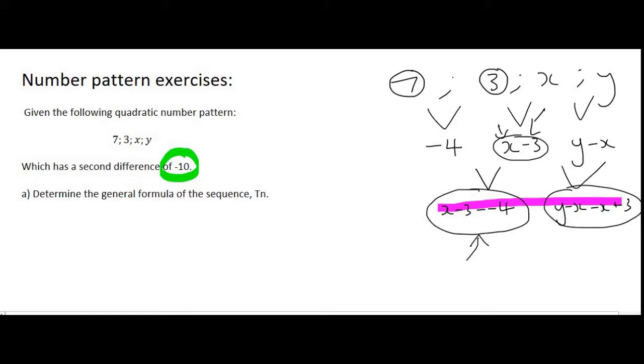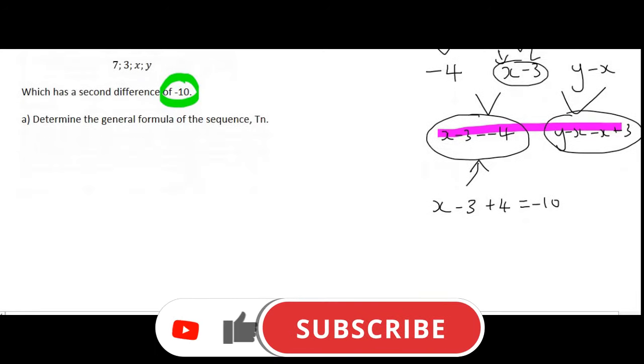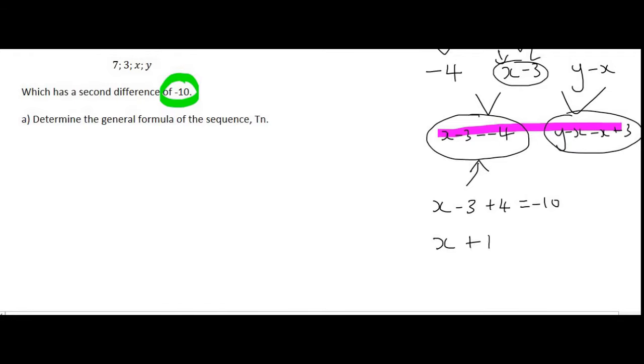We can use this one, which says x minus 3, a minus and a minus is a plus. Well, we know that that should equal minus 10. And so, minus 3 plus 4, well that gives us positive 1, equals to negative 10. And if you had to go solve for x, you're going to get an answer of negative 11.